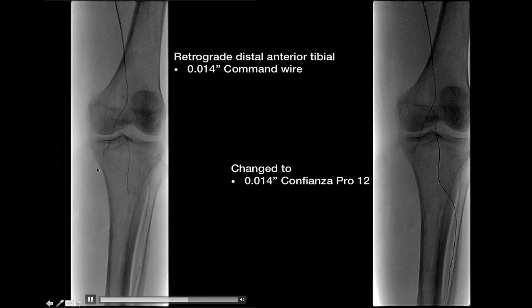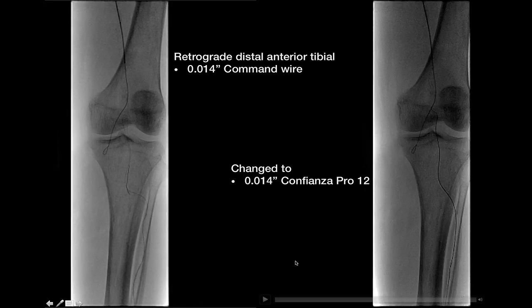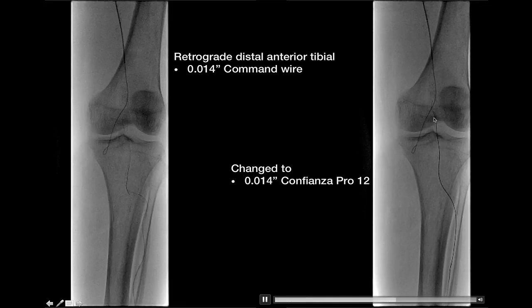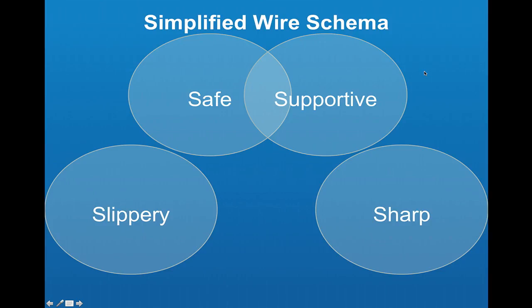Here is an example where we were unable to cross from above. Using pedal access from below, we first attempted with the Command wire, which lacked sufficient penetration. Switching to the Confianzo Pro wire, you can see it has the ability to push through and pop right through the lesion.